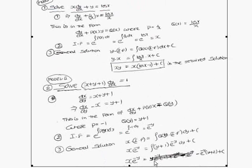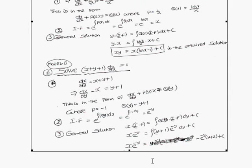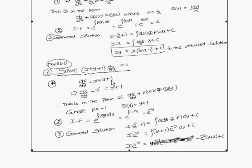For Model 2, solve (x + y + 1) dy/dx equals 1. Rewriting, dx/dy equals x plus y plus 1. This equation cannot be written in the dy/dx standard form, so it is better to convert it to dx/dy form. Rearranging: dx/dy minus x equals y plus 1, which is now in the form dx/dy plus P(y)·x equals Q(y).